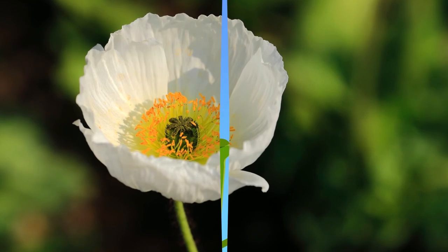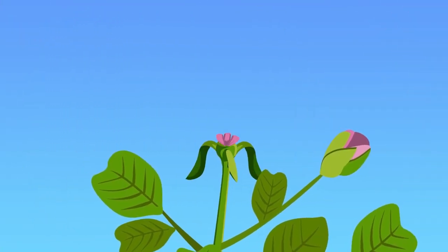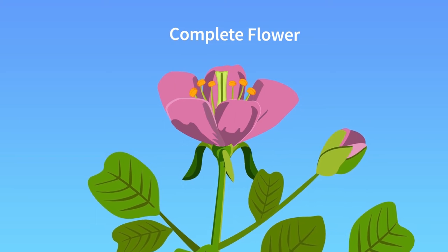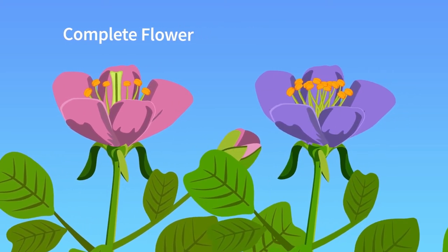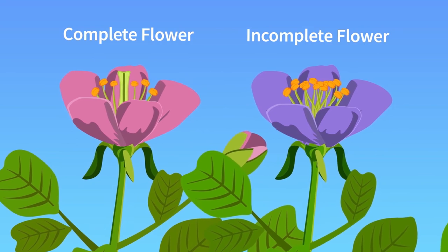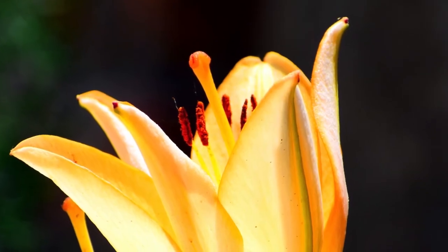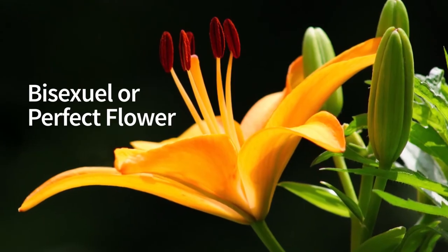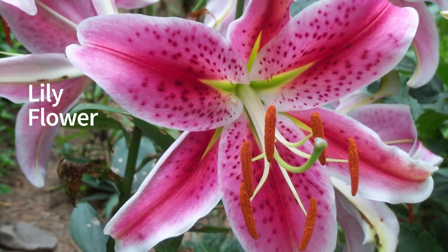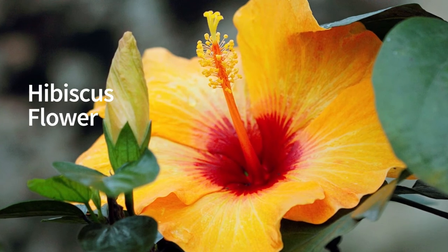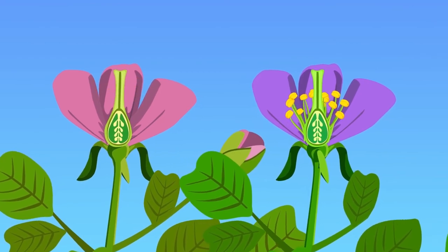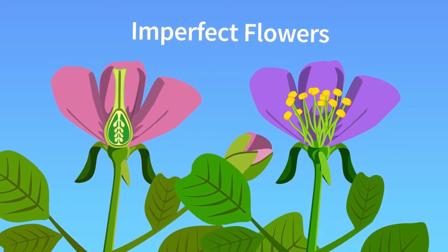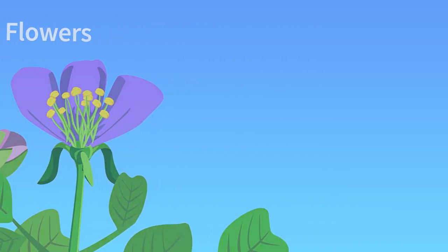Not all flowers contain all of the structures mentioned previously. If a flower has sepals, petals, pistils, and stamens, it is a complete flower. If a flower is missing any one of these structures, it is an incomplete flower. Moreover, a flower with both male and female reproductive organs is called a bisexual or perfect flower — examples include lily and hibiscus. A flower that is missing the male or the female reproductive organs is an imperfect flower.